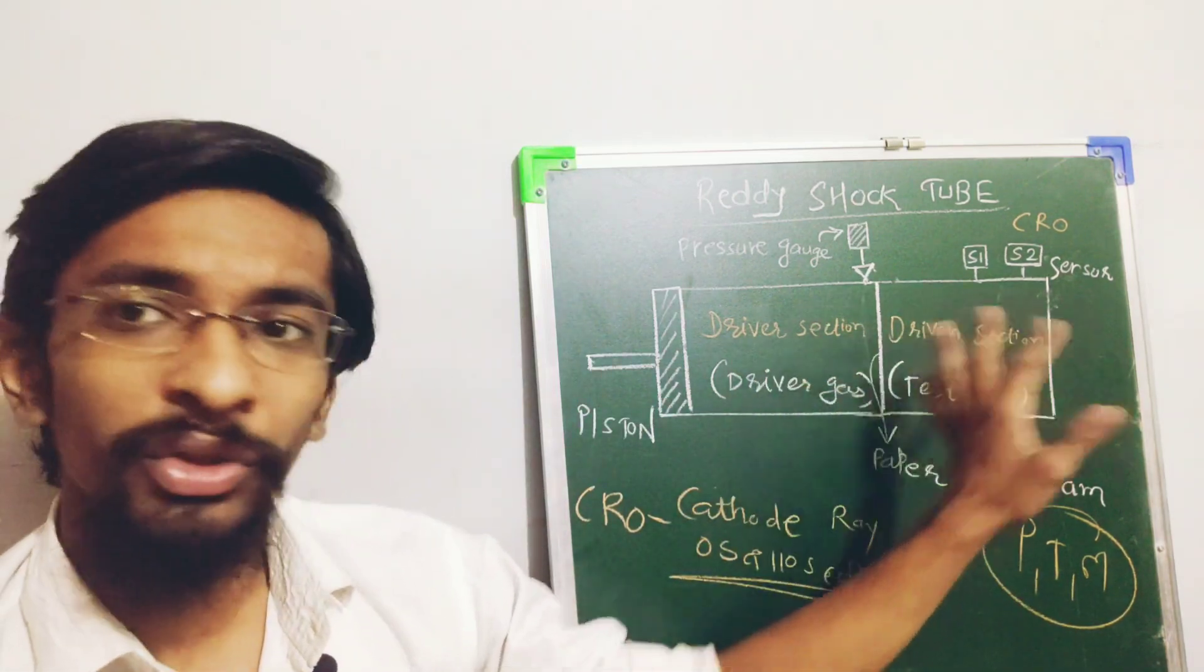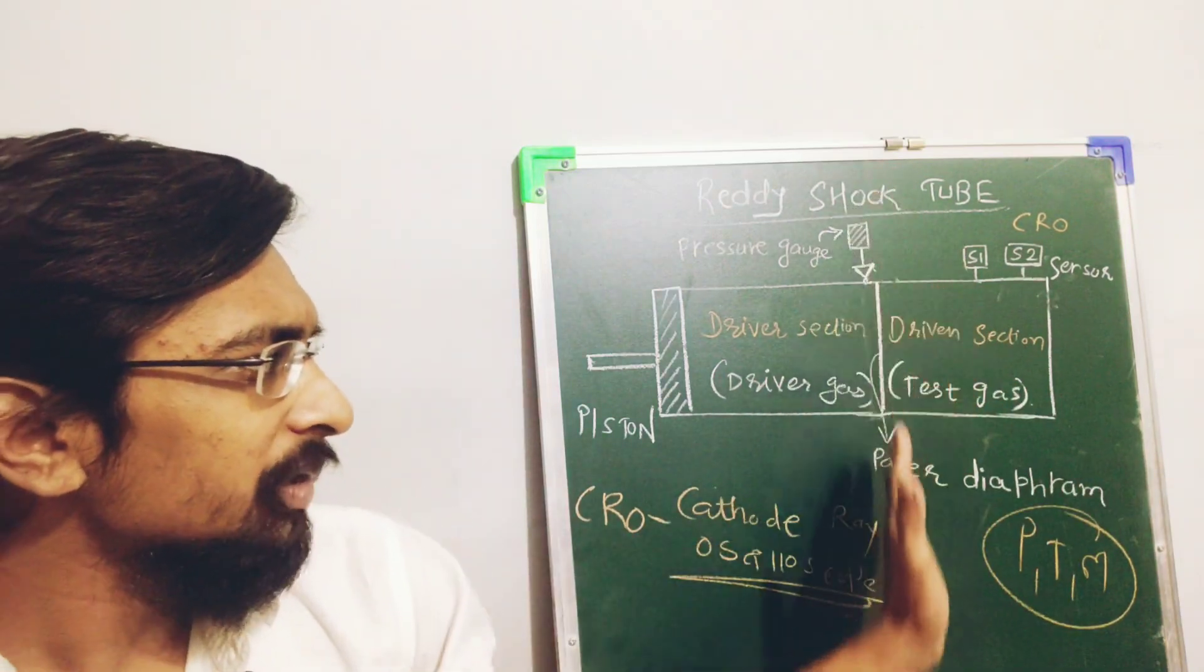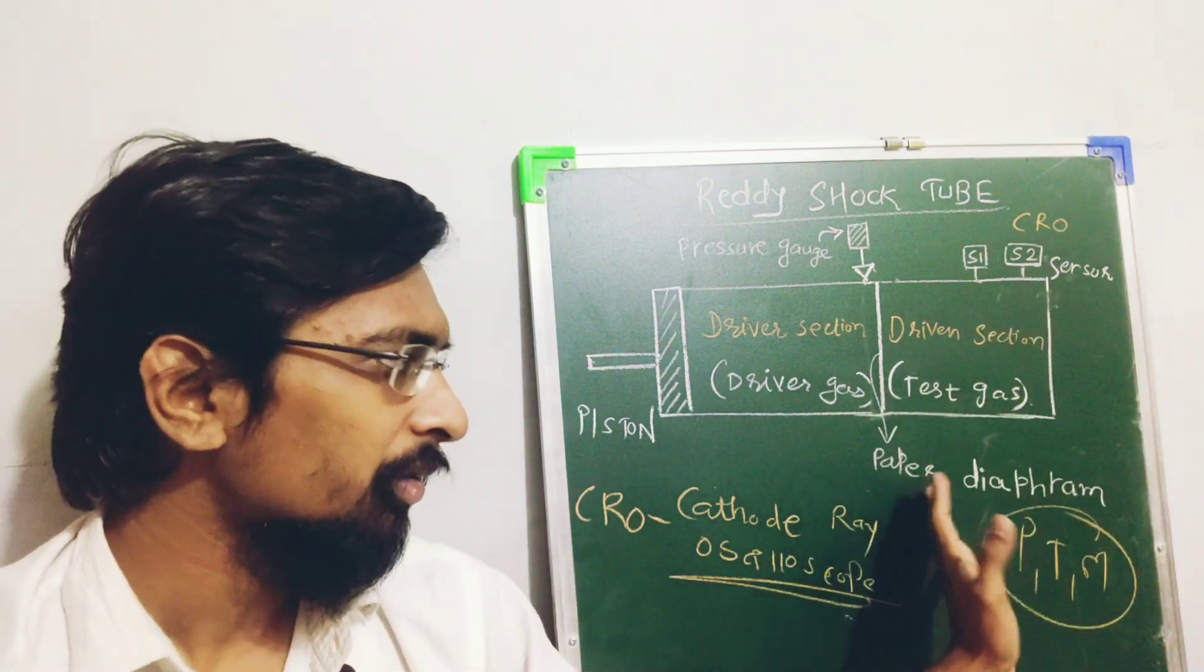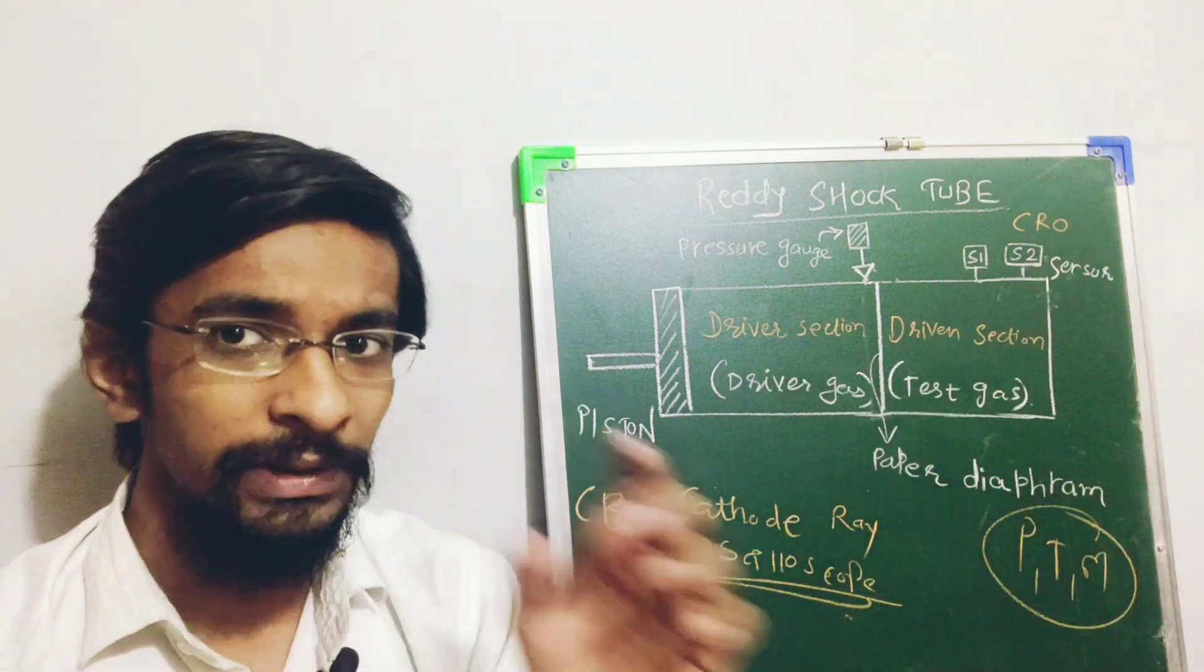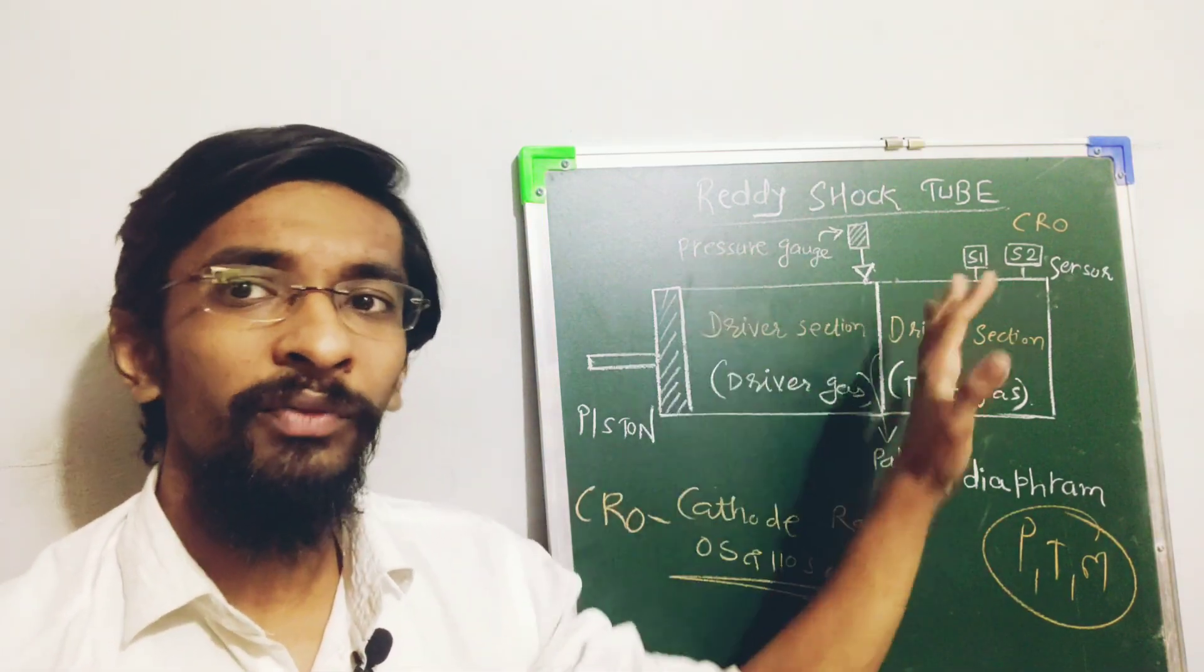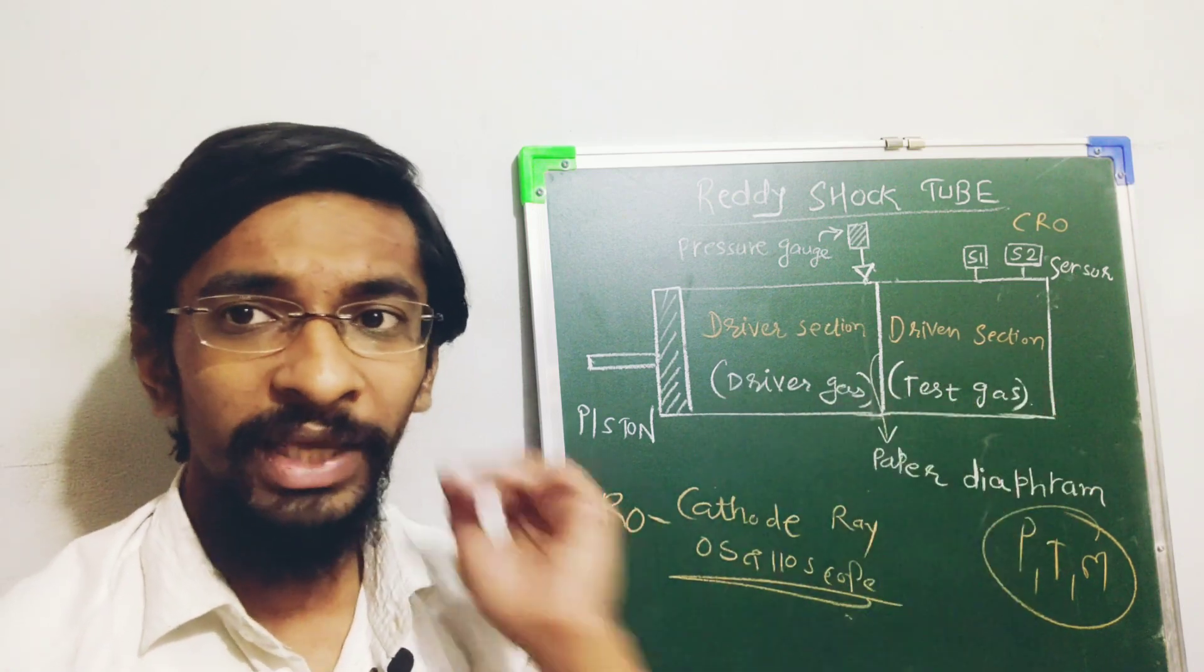So there we have two different parts or two different sections as you see, which is separated by some mica sheet, mylar sheet somewhere or some paper diaphragm. The diaphragm means the distinction which separates one part from the other. Here we have the gas and here also we have some gas. This is termed as the test gas and this is the driver gas.